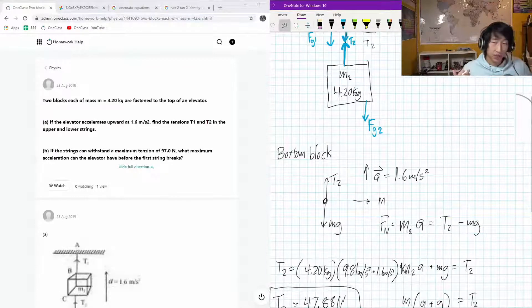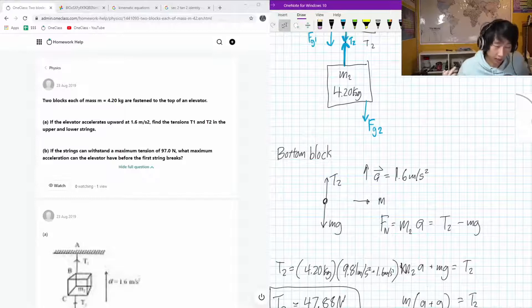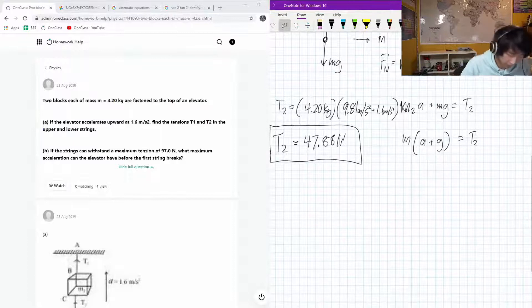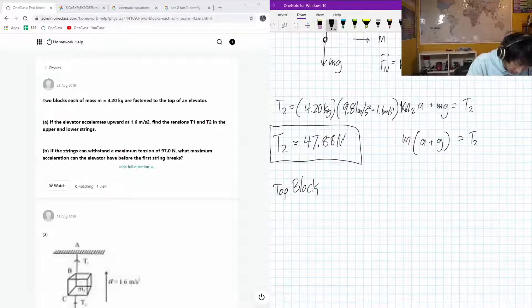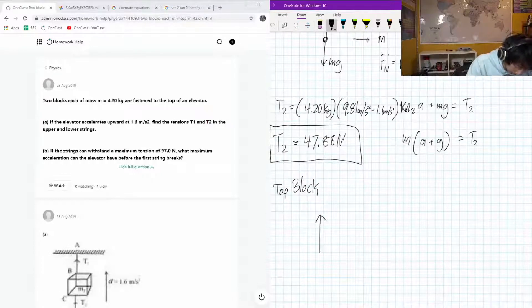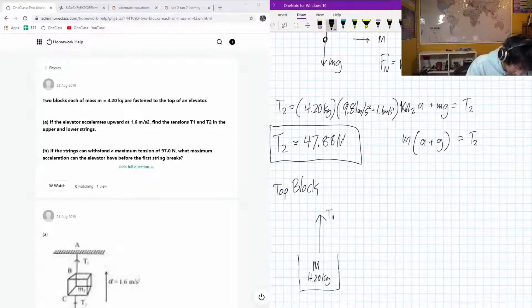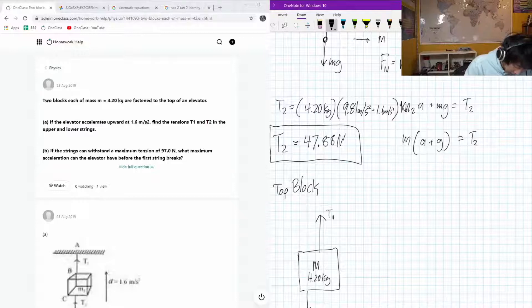Okay, now that tension T2 is also going to be felt at the bottom of T1. That's why we decided to go with T2 before we went for T1. So now let's talk about the top block. Top block, we have the upwards tension. We have the mass, and that's 4.20 kilograms. We have the force of gravity, mg, and tension T2.